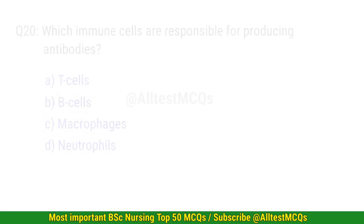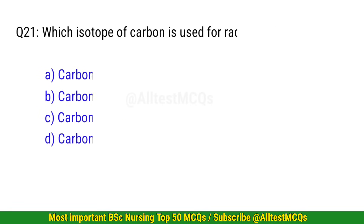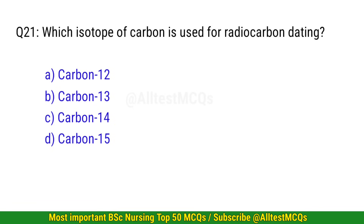Question 21. Which isotope of carbon is used for radiocarbon dating? The correct option is C: Carbon-14.